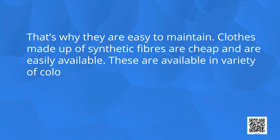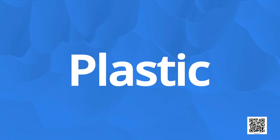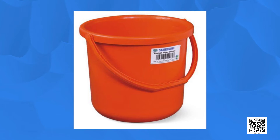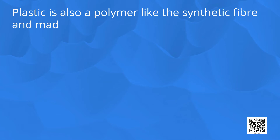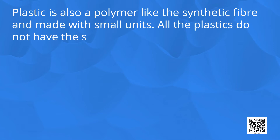Next we are going to learn about plastic. Plastic items you see at your home include chairs, buckets, toys and many other articles. Plastic is also a polymer like synthetic fiber and is made with small units. All plastics do not have the same type of arrangement of units — in some it is linear and in others it is cross-linked.